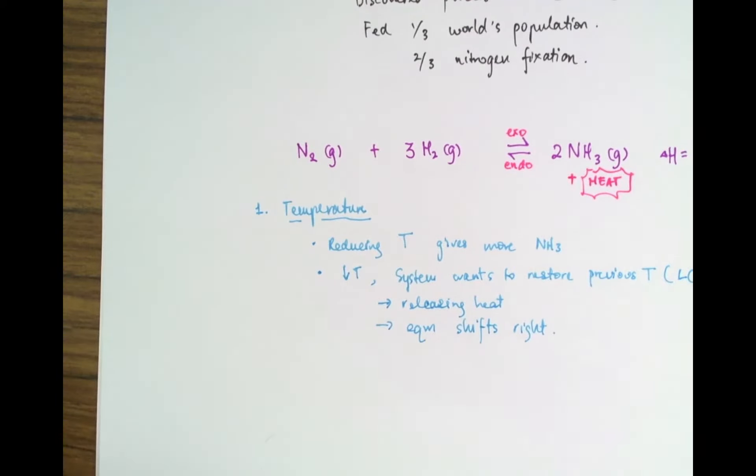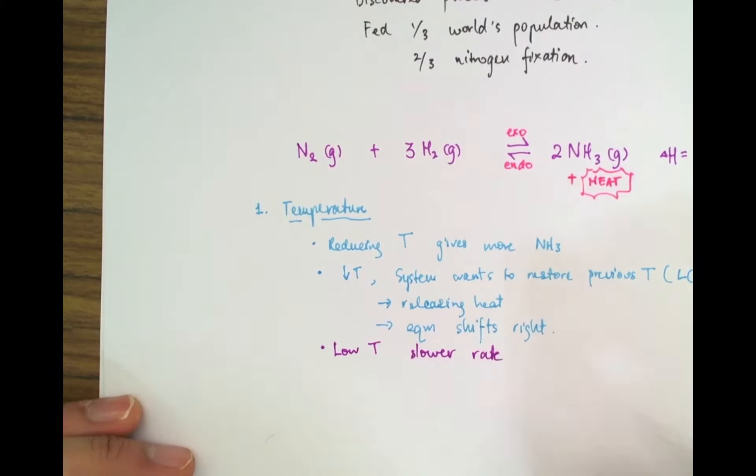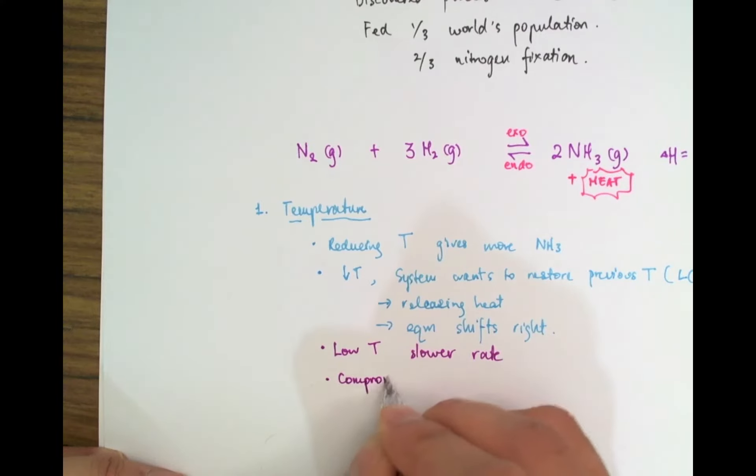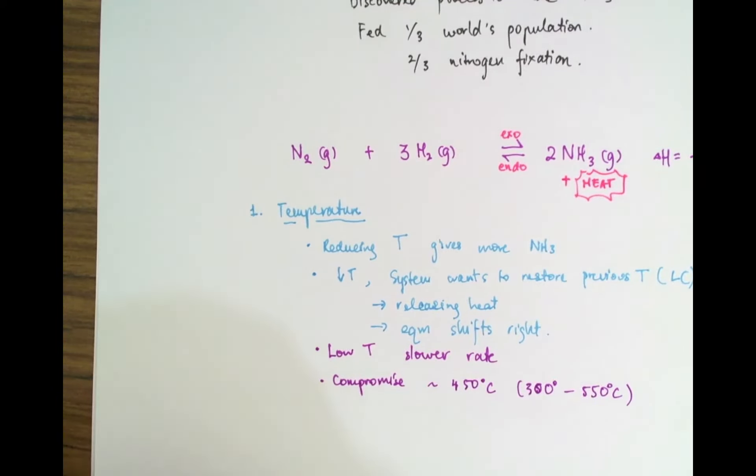And which direction releases heat? Well, the products side releases heat. So the equilibrium shifts to the right to refurnish that heat and bring it back up to the previous temperature. However, low temperature means slower rate of reaction. And that's not desirable. So instead, what we want is a compromise. So it turns out that the compromise temperature is about 450 degrees Celsius. In fact, it goes from about 300 to 550 degrees Celsius to give us a good rate of reaction.